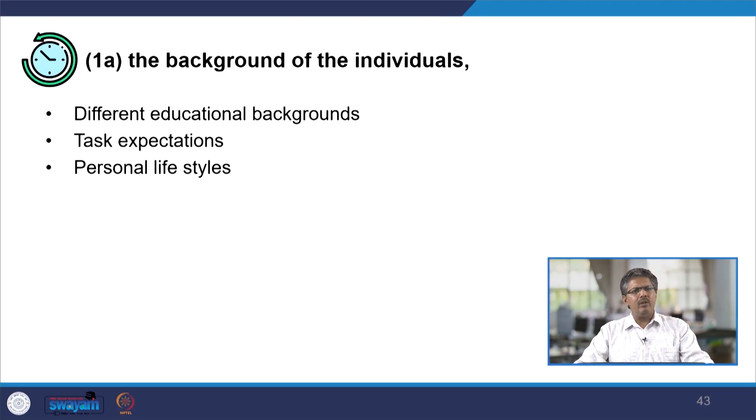The third thing is personal lifestyles. For example, somebody may be a very conservative or orthodox person, while on the other hand somebody can be a party animal, a flamboyant type of person. When people with these kinds of personalities head different divisions of the organization, there will always be a clash in their approach to work. These things make a significant impact.